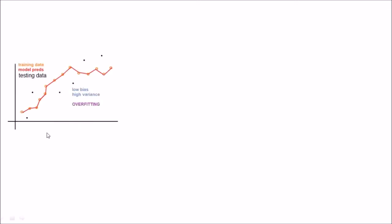For example, imagine on the x-axis I have the age of people, and on the y-axis I have their IQ level. These orange dots are the people who are in my training set — I measured their age and IQ levels and plotted them on this graph. Now I want to calculate the IQ of these black dots, so I need to create a machine learning model.